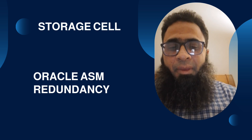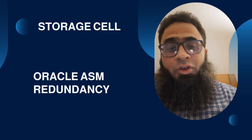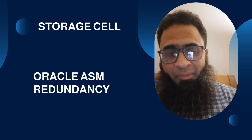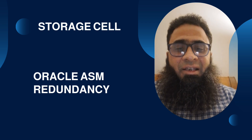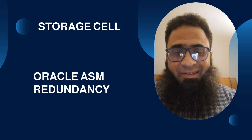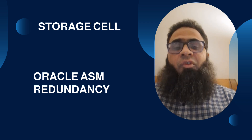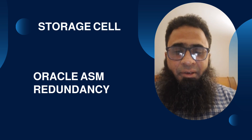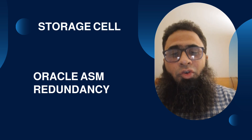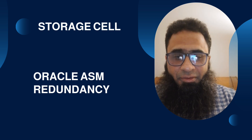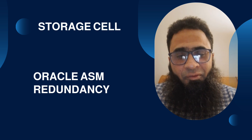In normal redundancy, we have one primary and one mirror. If you select normal redundancy in Oracle ASM for Exadata, you will have one primary and one mirror. If you choose high redundancy, you have one primary and two mirrors. For external redundancy, there is no mirror.